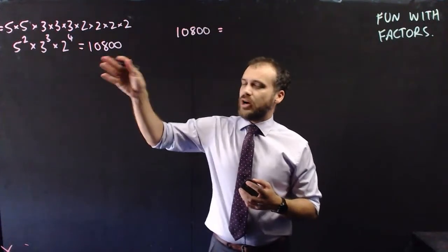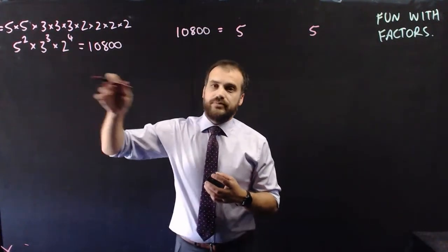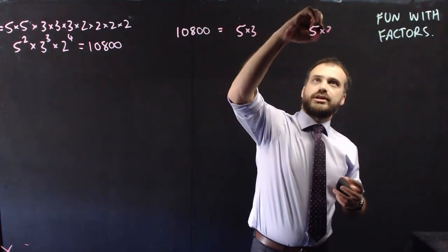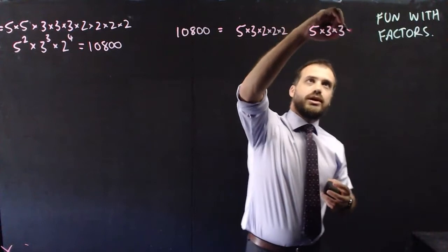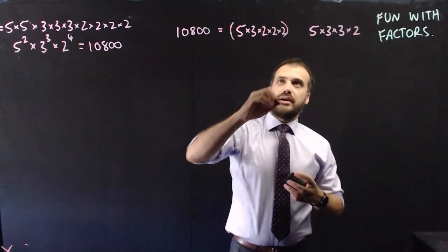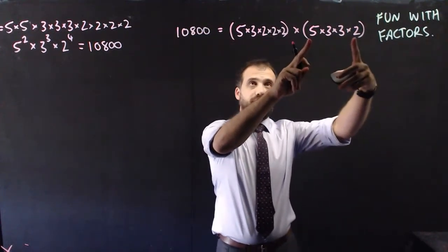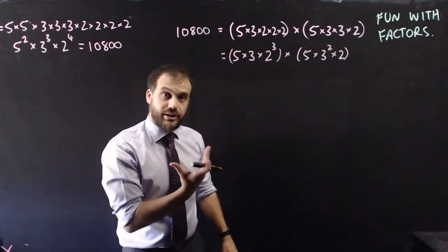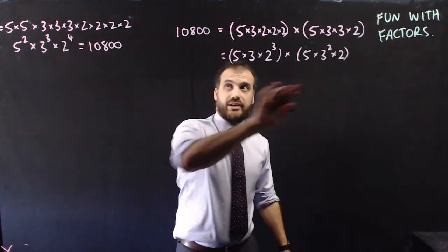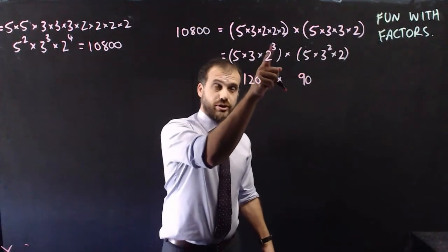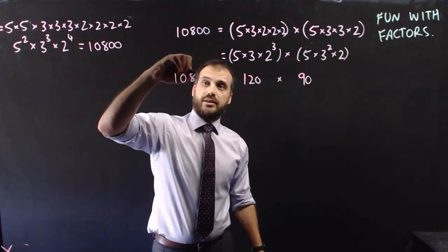I'll show you what I mean. I've got 5 squared, which is 5 times 5 — I'm going to use one 5 here and one 5 over here. I've got 3 times 3 times 3, so I'm going to use one 3 here and two 3's here. And I have 2 to the 4 — I might use three of those 2's here and one of those 2's there. This is a really powerful technique, because now I have a number times another number, and I'm sure it's going to equal 10,800 — a factor times a factor. Using my calculator, 5 times 3 times 2 cubed is 120, and 5 times 3 squared times 2 is 90. So 120 times 90 equals 10,800.